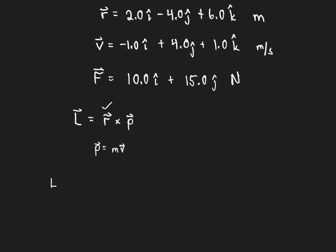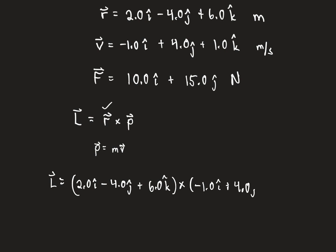So L is going to be (2.0 î − 4.0 ĵ + 6.0 k̂) crossed into the momentum, which has the same numerical values as the velocity because the mass is one. If the mass were two, you'd multiply the velocity by two to get your values. We need to take this cross product.